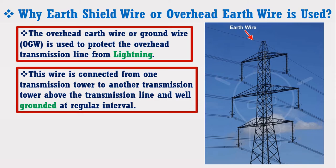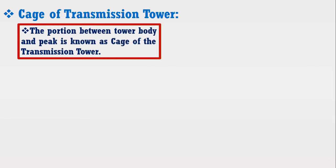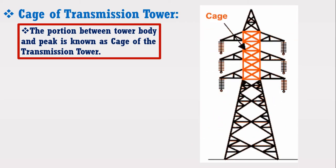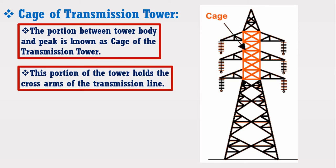Now I am going to discuss about the cage of the transmission tower. The portion between the tower body and peak is known as the cage of the transmission tower. Consider the figure in which the arrow shows the cage of the transmission tower. This portion of the tower is very important and holds the cross arms of the transmission line.